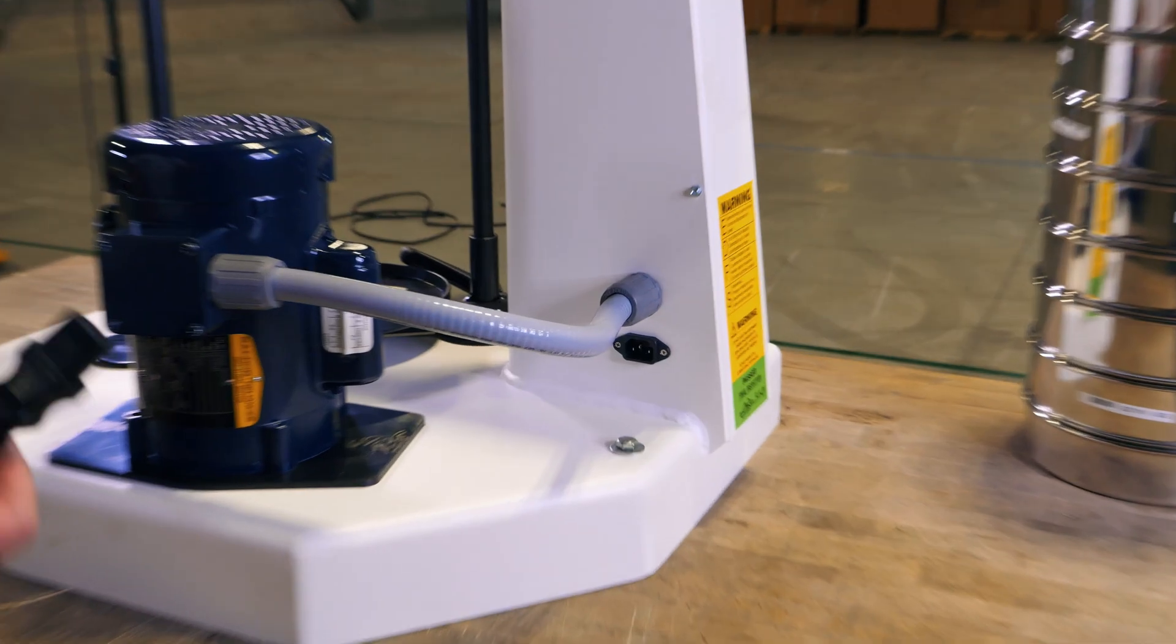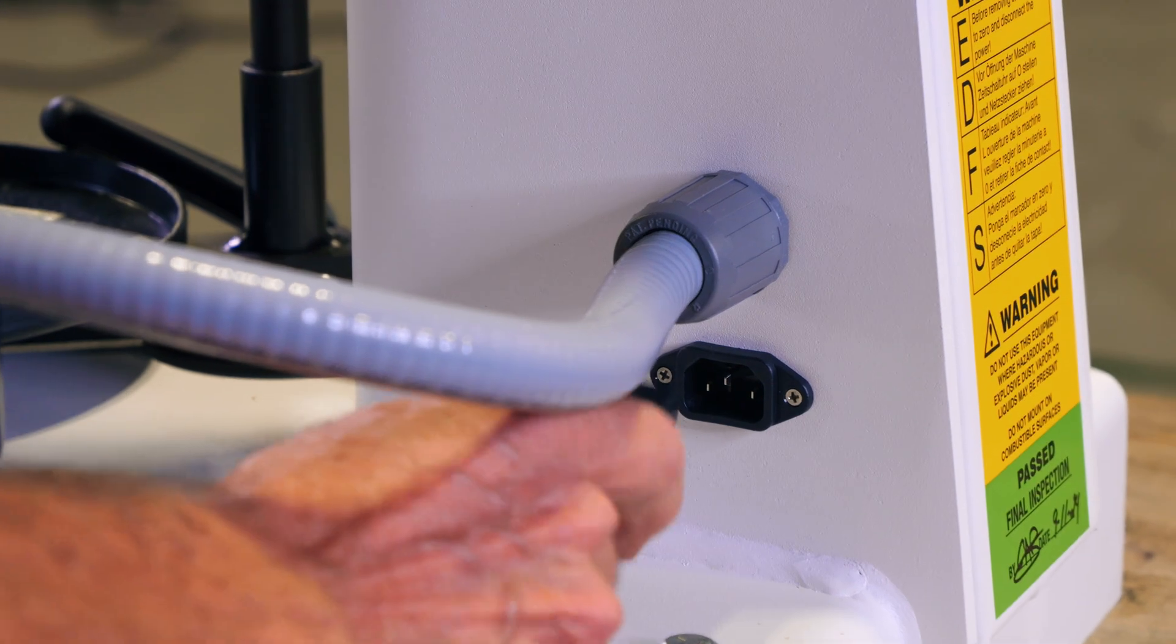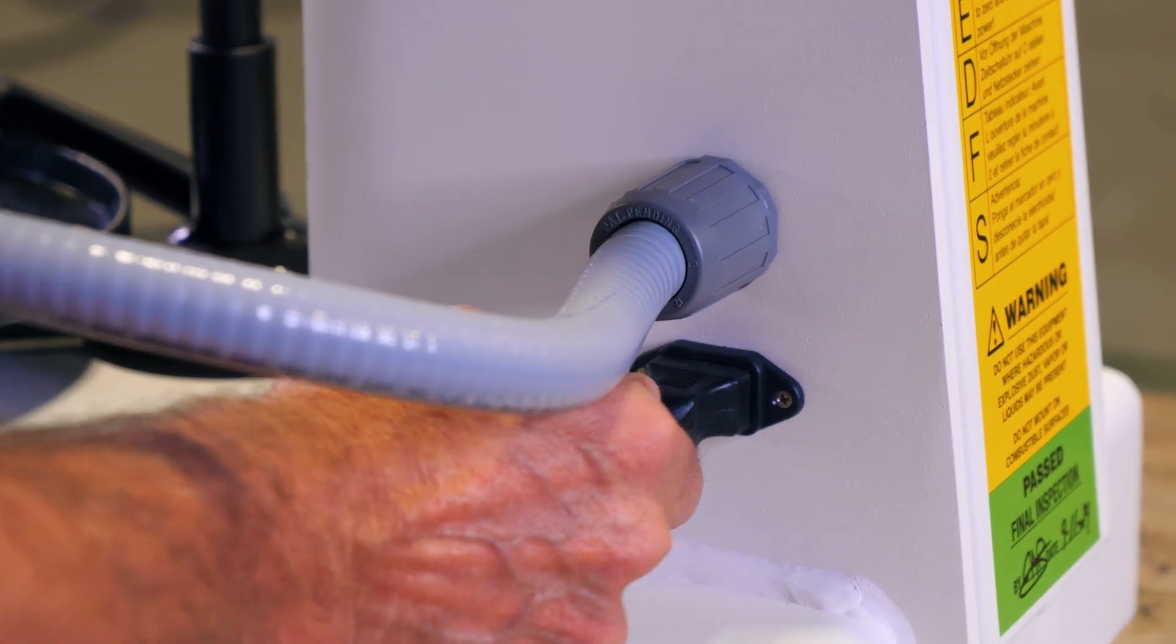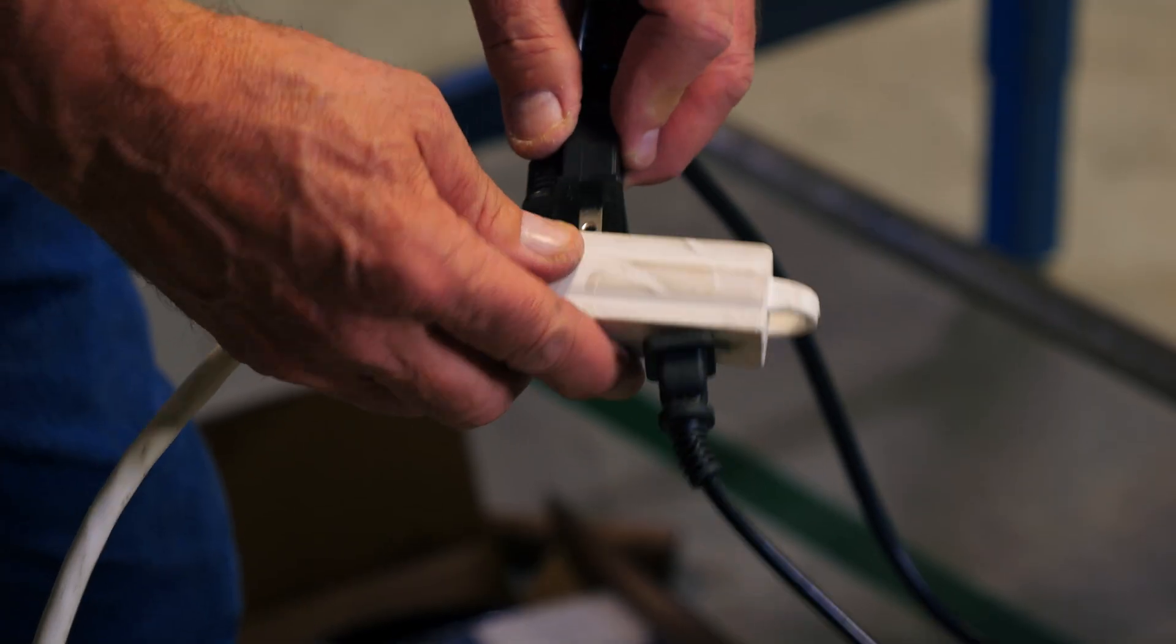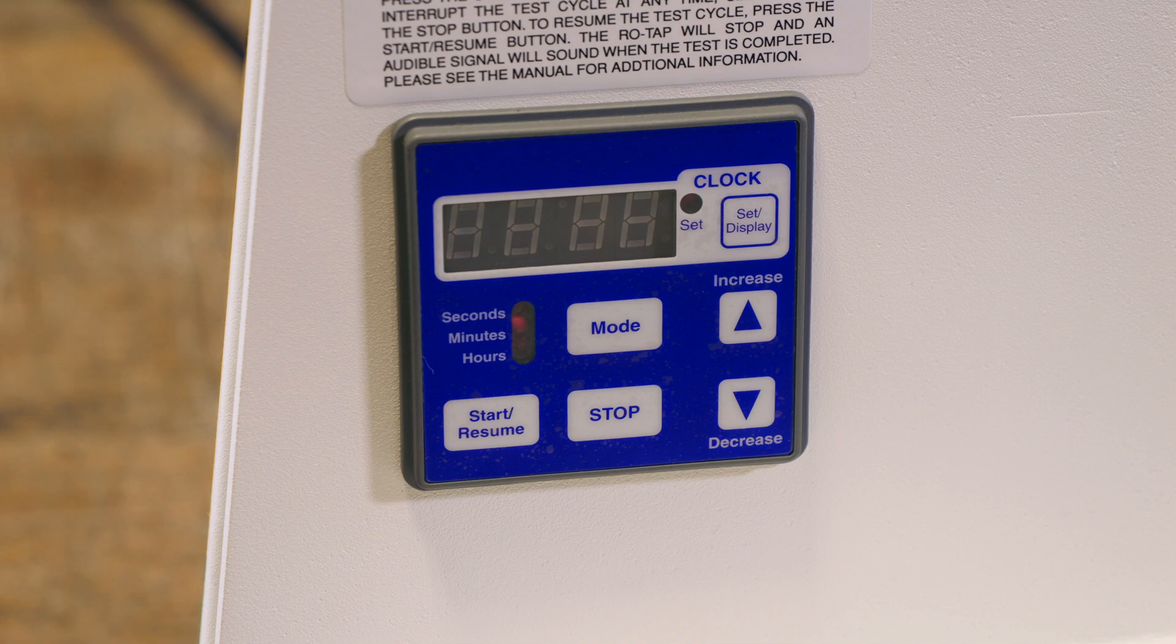Okay, now it's time to turn the sieve shaker on and run it. First and foremost, plug the power cord into the back of the ROTAP and into any standard outlet, no extra amps required. This will turn on the control interface.